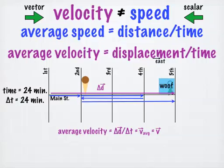This also means that velocity has both a magnitude and a direction. In this case, the magnitude of the velocity is one-sixth of a block per minute, and the direction is east.